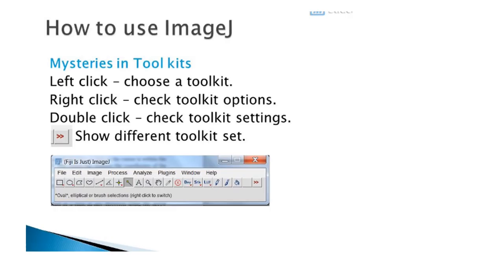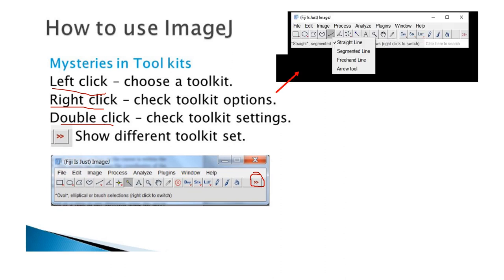The first thing I want you to do after you install ImageJ is to play with it. Go there and try to play with the left click, try the right click, and try the double click. If you have never used ImageJ, they do slightly different things. With the left click you will choose a line, with the right click you can make a straight line, a segmented line, a freehand line, or an arrow. Just try it, and maybe on your computer it works a little bit differently.